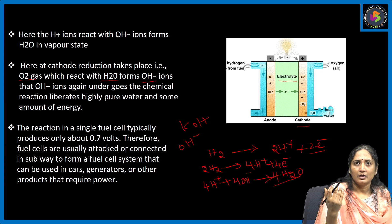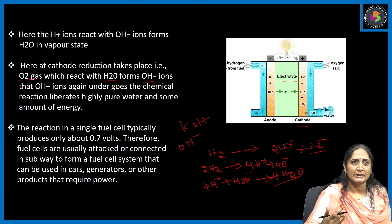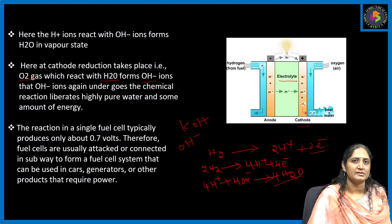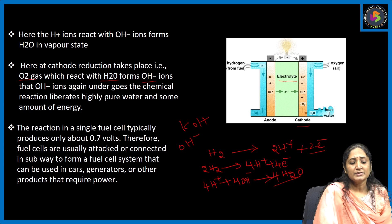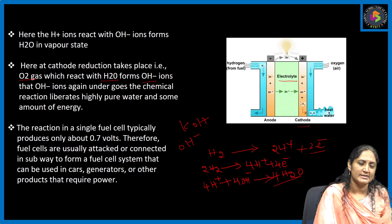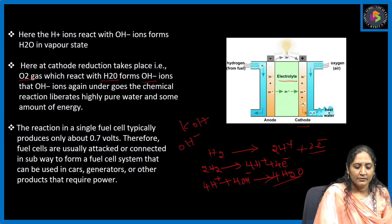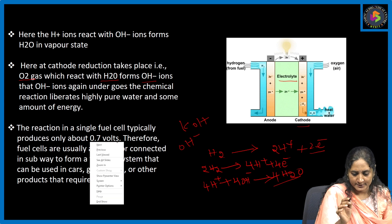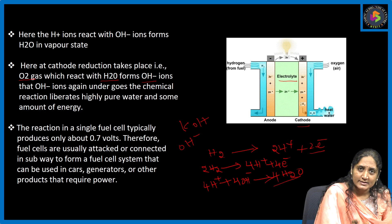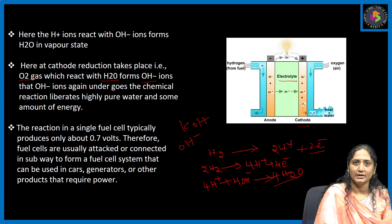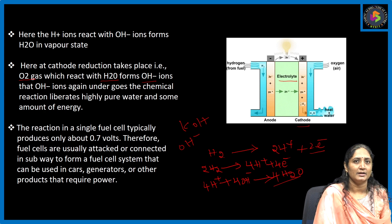Oxidation and simultaneously reduction both take place. A typical fuel cell produces only 0.7 volts of energy.